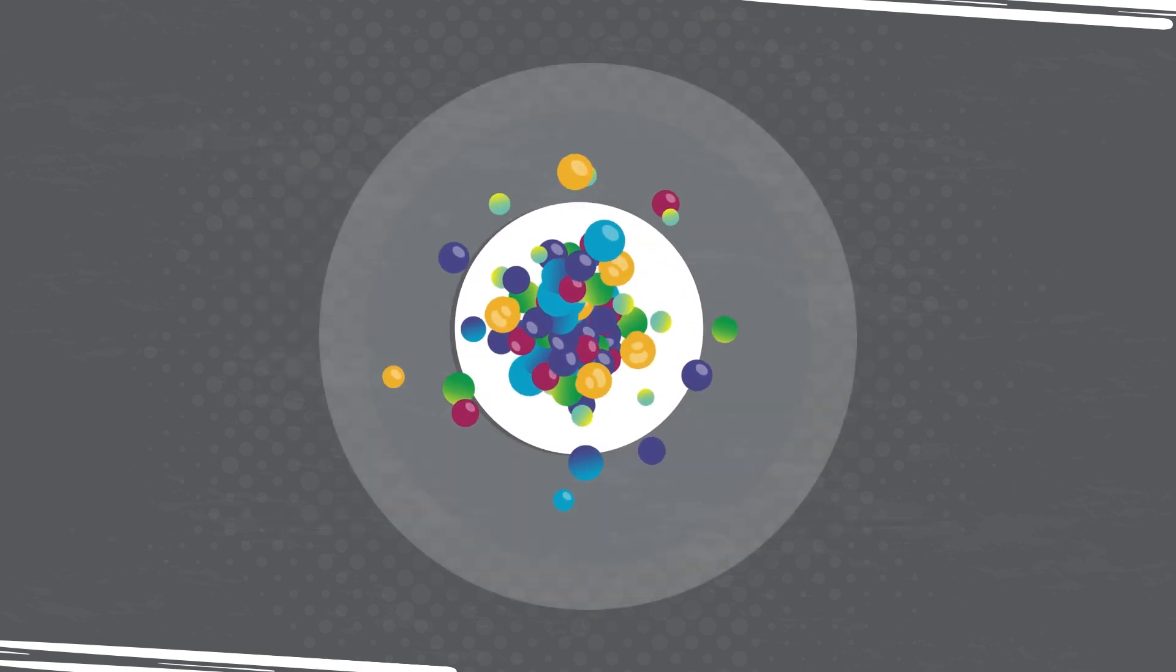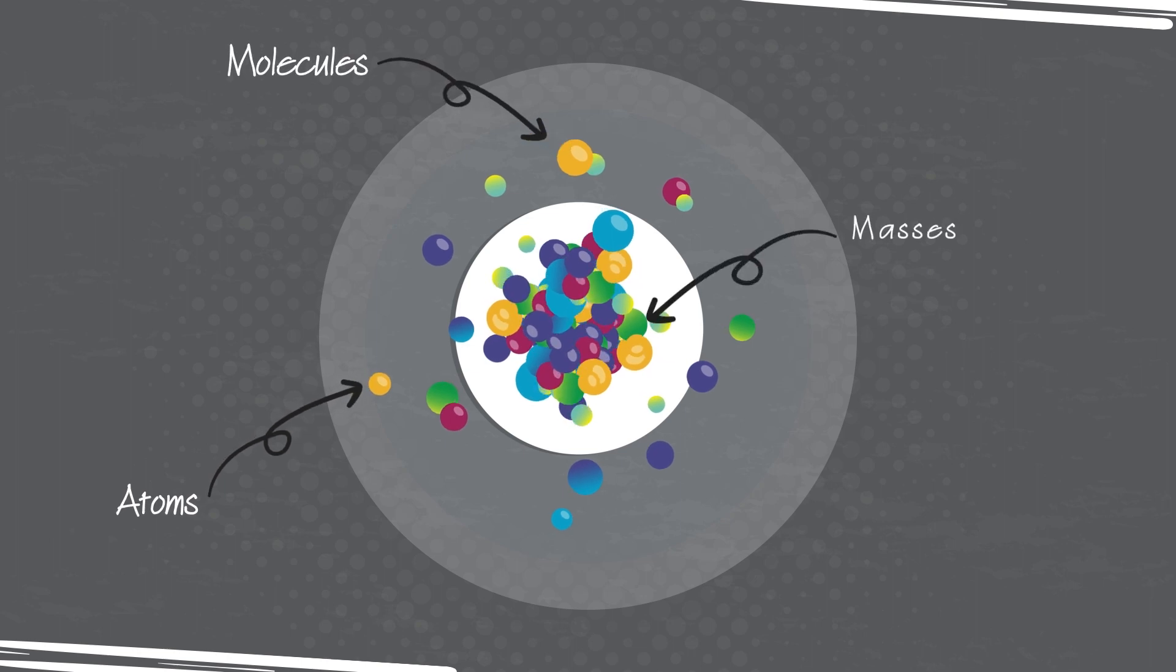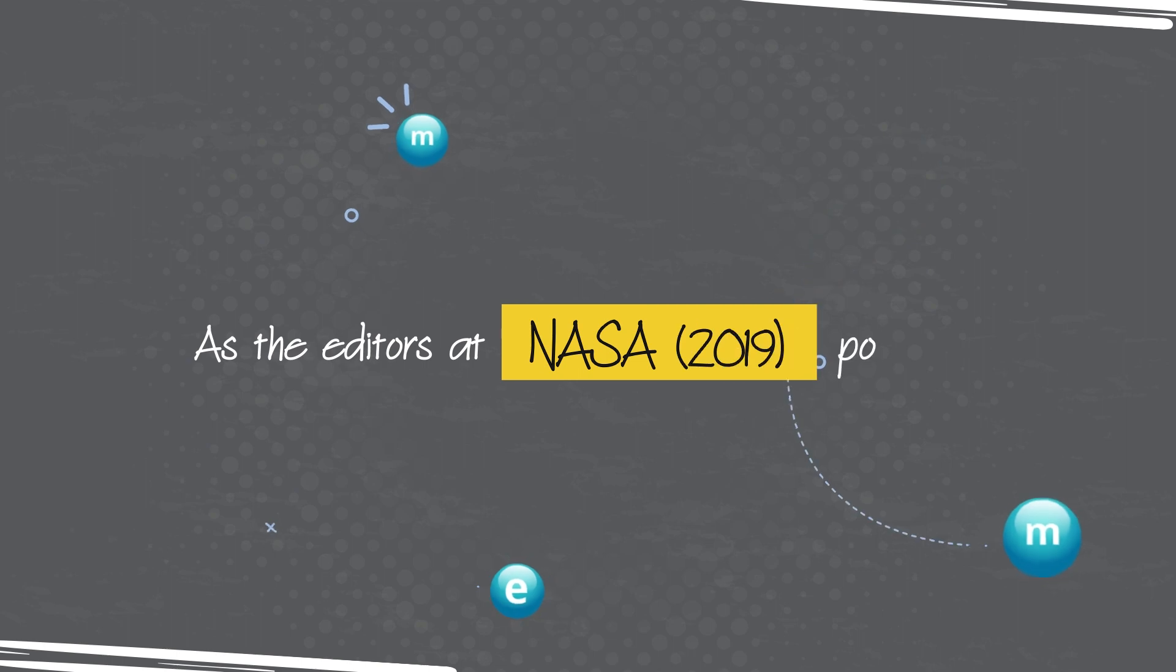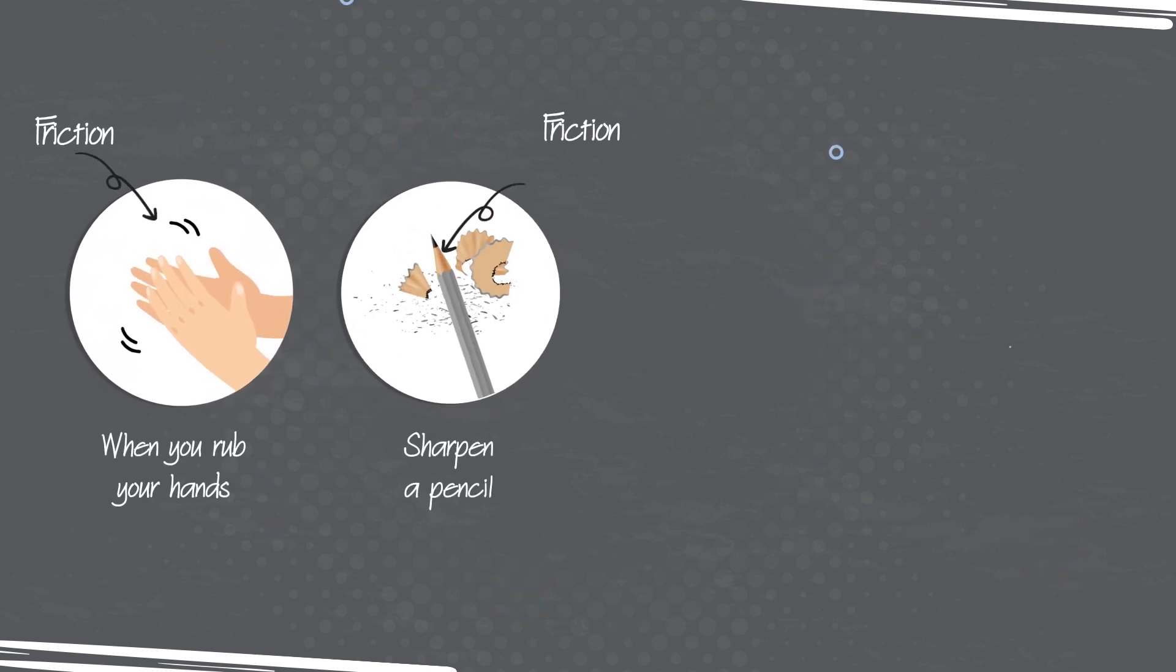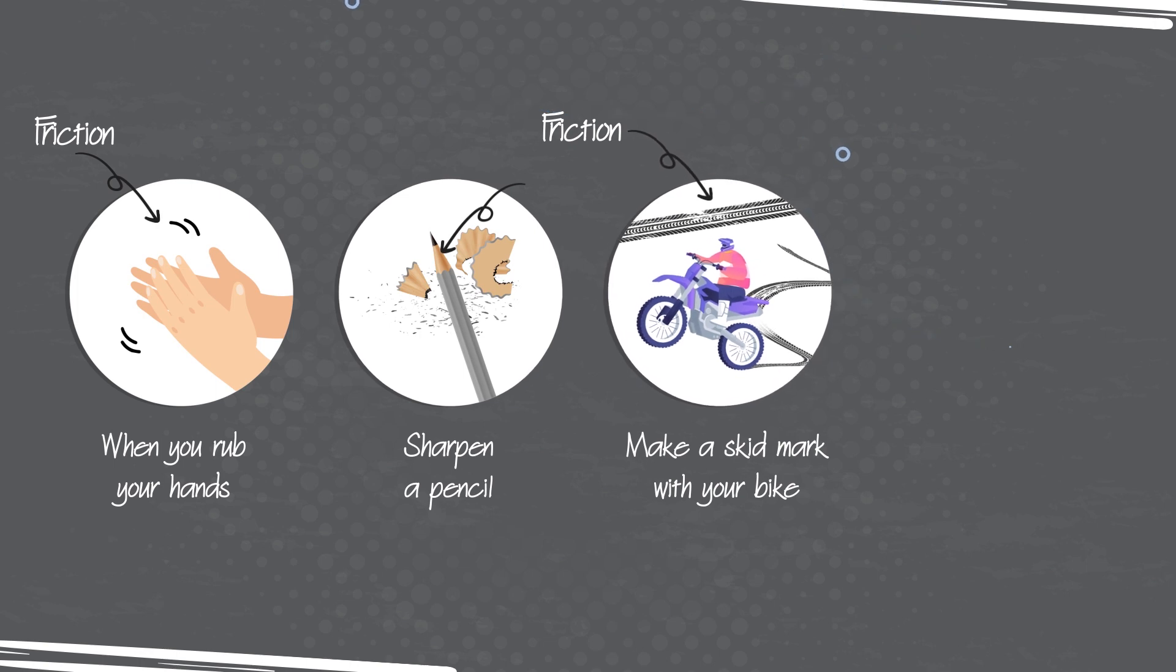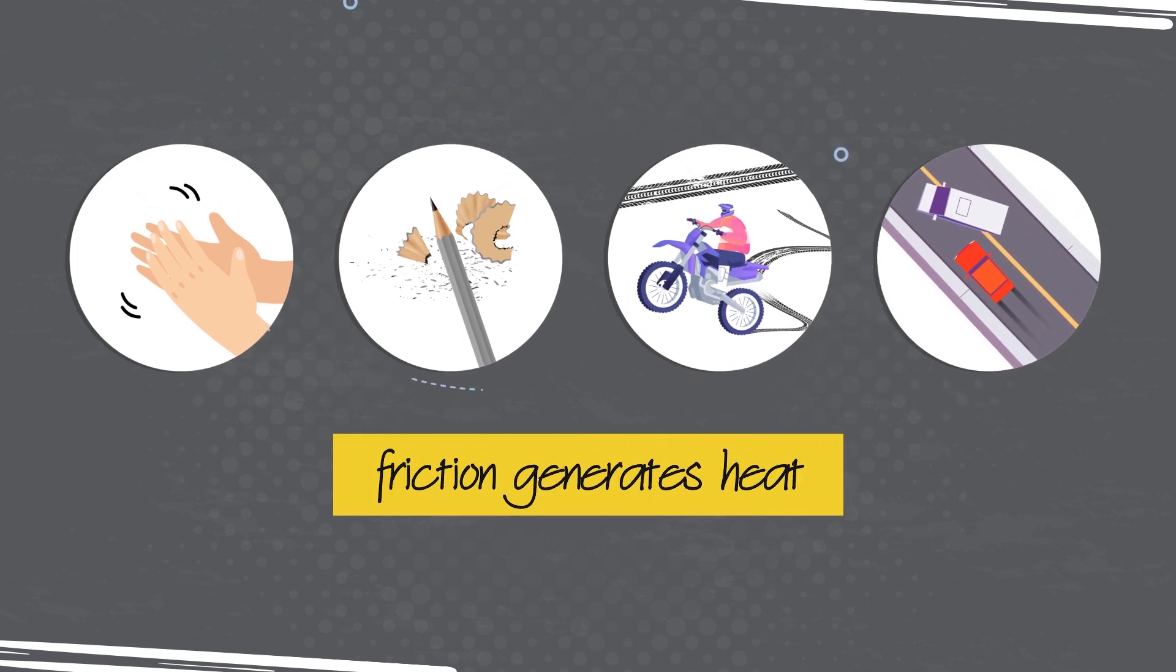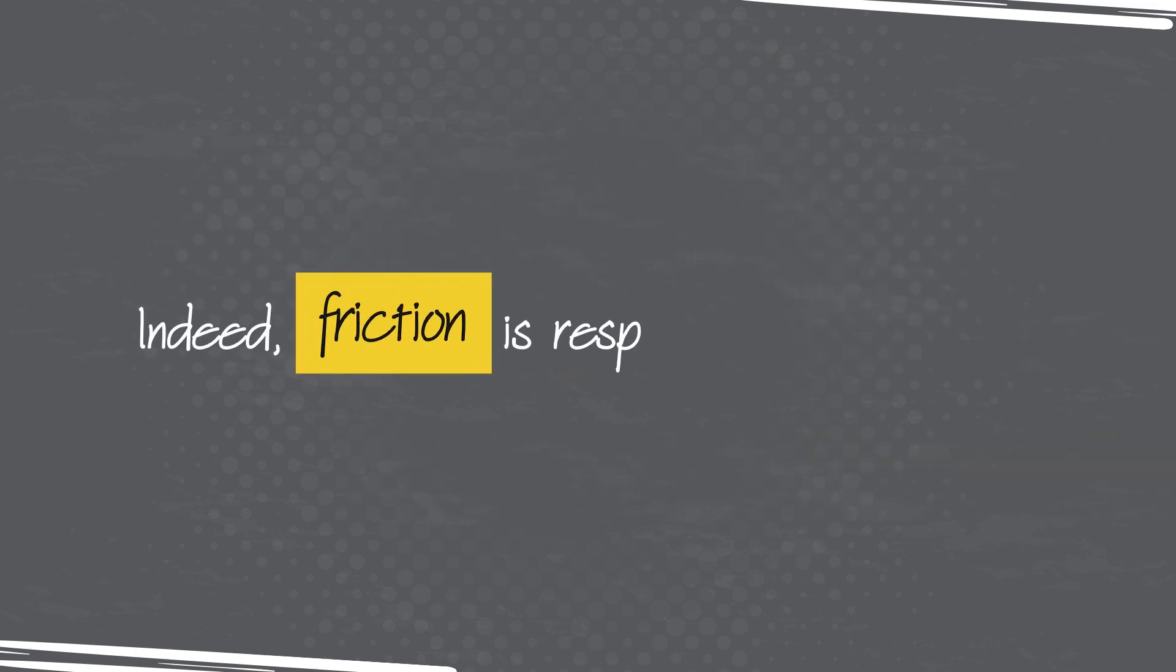Succinctly, the motion and subsequent friction of atoms, molecules, masses and objects create heat. As the editors of NASA 2019 point out, when you rub your hands, sharpen a pencil, make a skid mark with your bike or use the brakes on your car, friction generates heat. Indeed, friction is responsible for almost all heat creation in the universe.